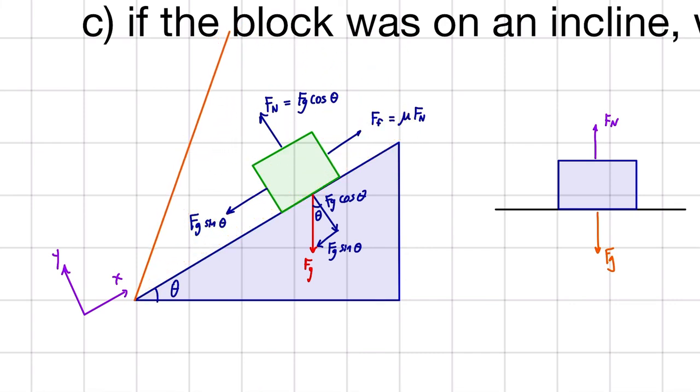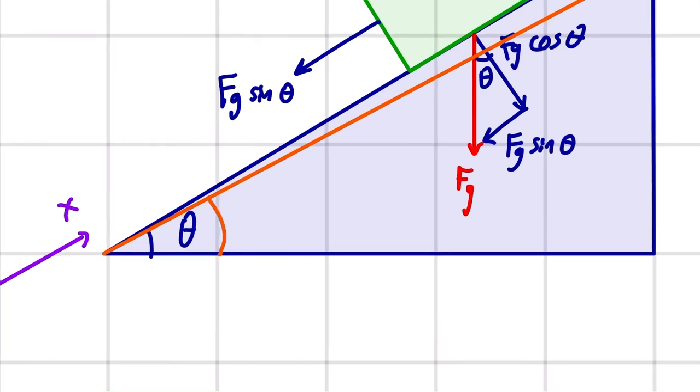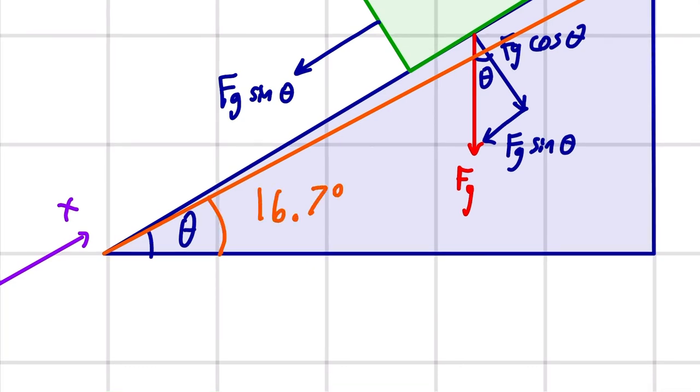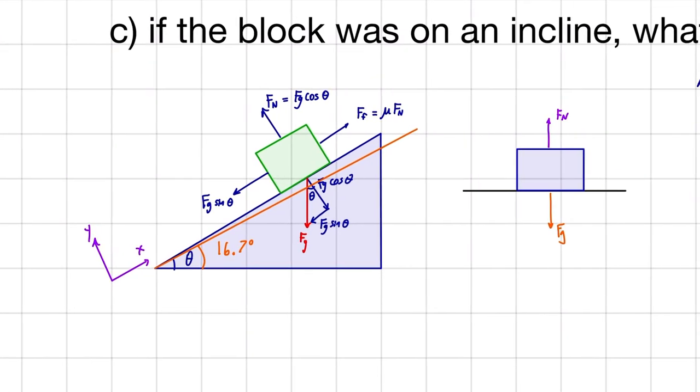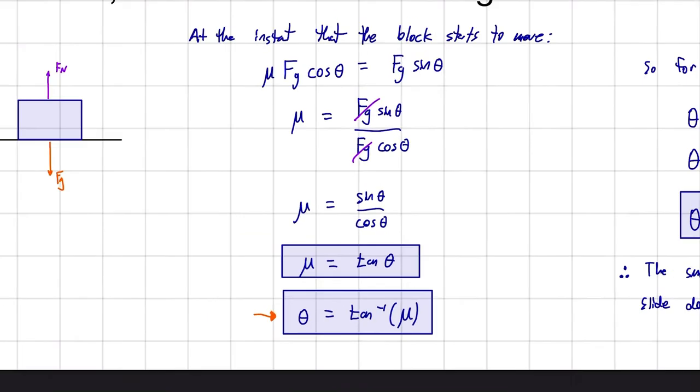But then if it's greater than theta, so obviously if the steeper we get it will move, so 16.7 degrees is going to be that magic, that kind of magic angle. So 16.7 degrees is going to be that magic angle that causes this block to move.